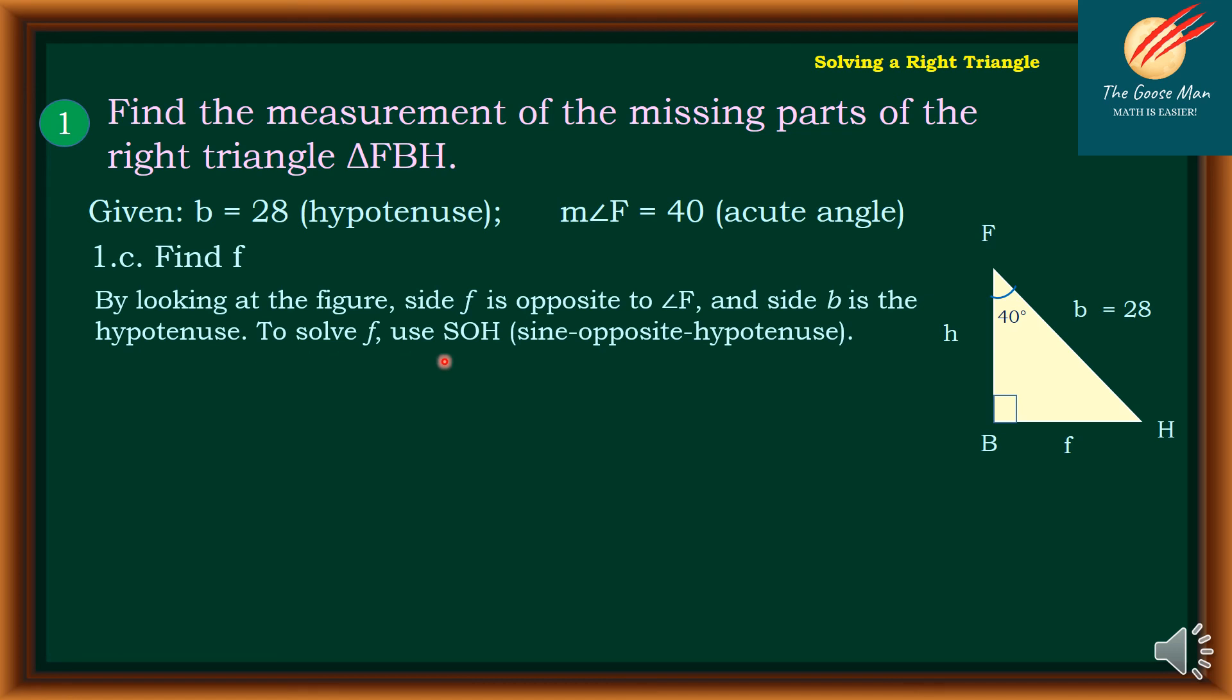To solve f, we will use SOH, that is sine opposite hypotenuse. Sine F is equal to opposite over hypotenuse, so the opposite of F equals f over b.